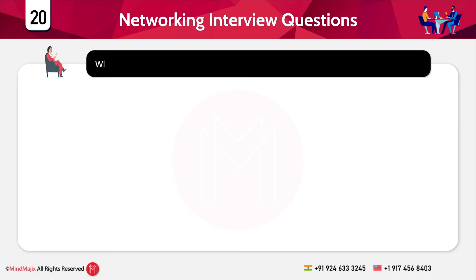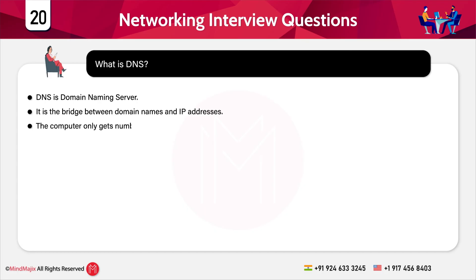The next question is: what do you mean by DNS? DNS is the Domain Name Server or Domain Naming Server — it is the bridge between domain names and IP addresses. Computers only understand numbers whereas humans remember names. For example, gmail.com is a name understood by humans, but when you type gmail.com in your browser, the DNS translates it into the corresponding IP address of the server and then processes your request.